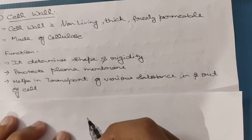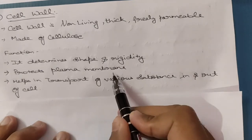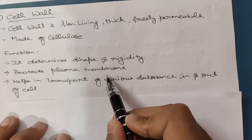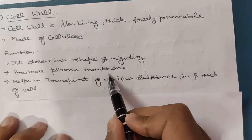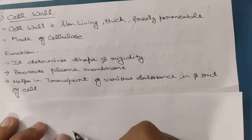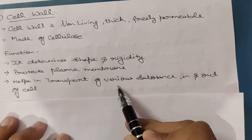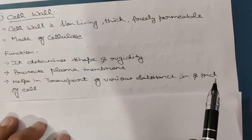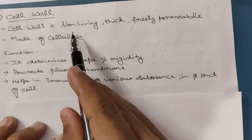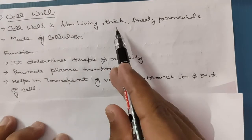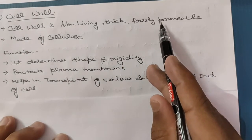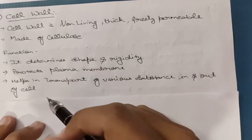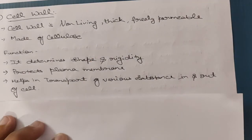The functions of the cell wall are: first, because it is thick, it determines the shape and rigidity of the cell; second, it protects the plasma membrane, and in turn the internal contents of the cell; and third, because it is freely permeable, it helps in transport of various substances in and out of the cell. Key differences: cell membrane is living, thin, selectively permeable, made of protein and lipid; cell wall is non-living, thick, freely permeable, made of cellulose.